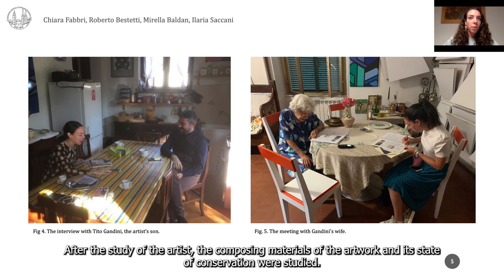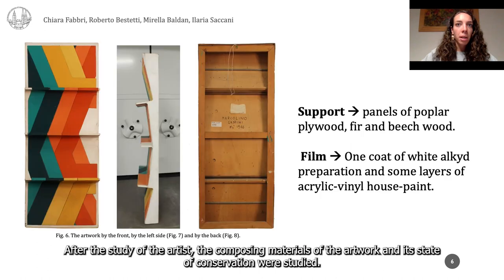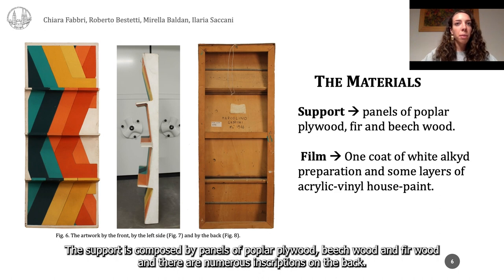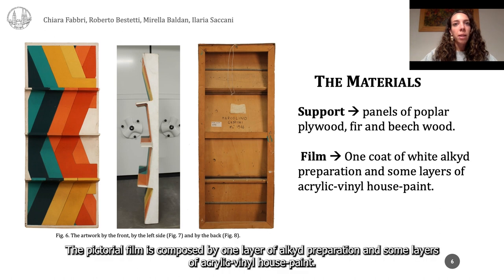After the study of the artist, the composing materials of the artwork and its state of conservation were studied. The support is composed of panels of poplar plywood, beechwood, and firwood, and there are numerous inscriptions on the back. The pictorial film is composed of one layer of alkyd preparation and some layers of acrylic vinyl house paint.